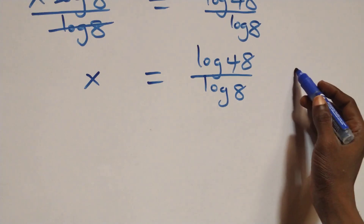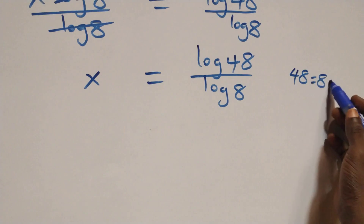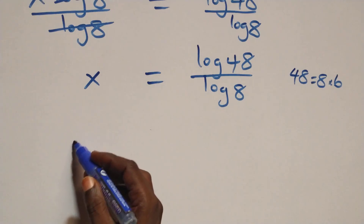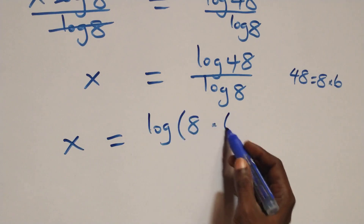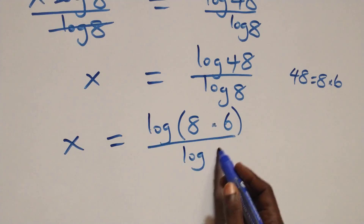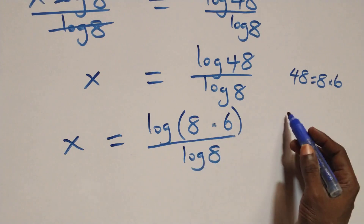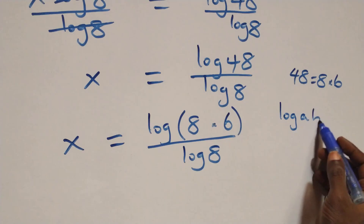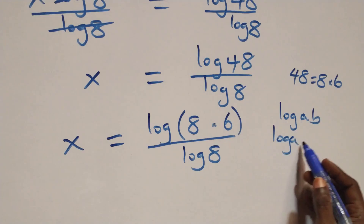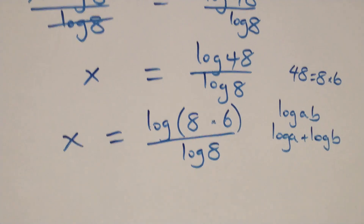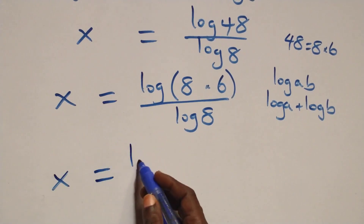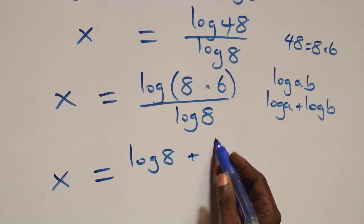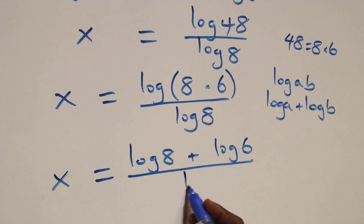Next step here, we can write 48 as 8 times 6. Then what we have here becomes x equals to log(8 times 6) over log 8. Then, applying the product rule of logarithms — when we have log(a times b), this is the same thing as log a plus log b. So what we have here becomes x equals to log 8 plus log 6, all over log 8.